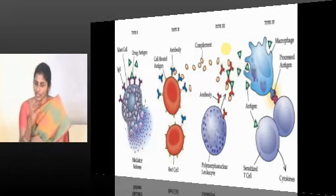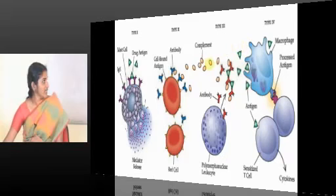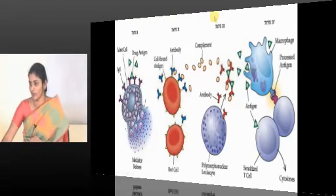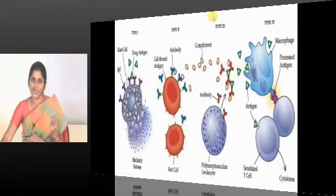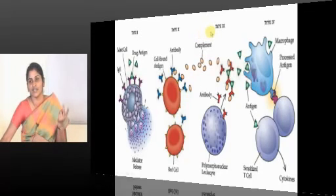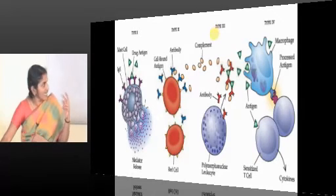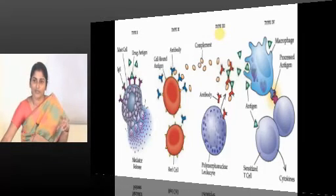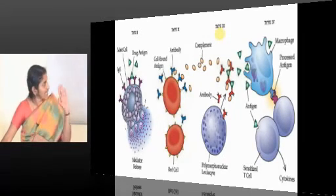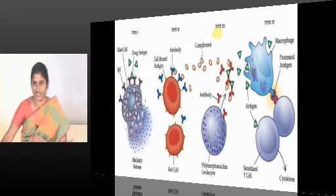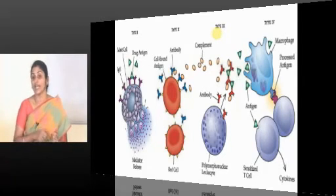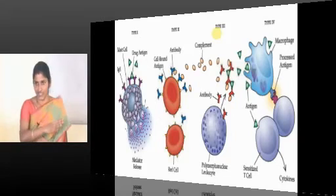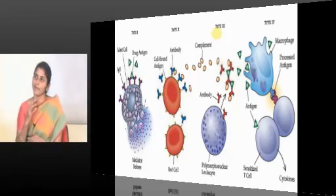All your organ-specific autoimmune disorders will be Type 2. Because in pernicious anemia the autoantibodies are against the parietal cells antigen. It will just come and attack the parietal cells, so it is organ specific. In myasthenia gravis, autoantibodies are against the neuromuscular junction. All these are attacking the antigen present on the surface. So organ-specific autoimmune disorders.